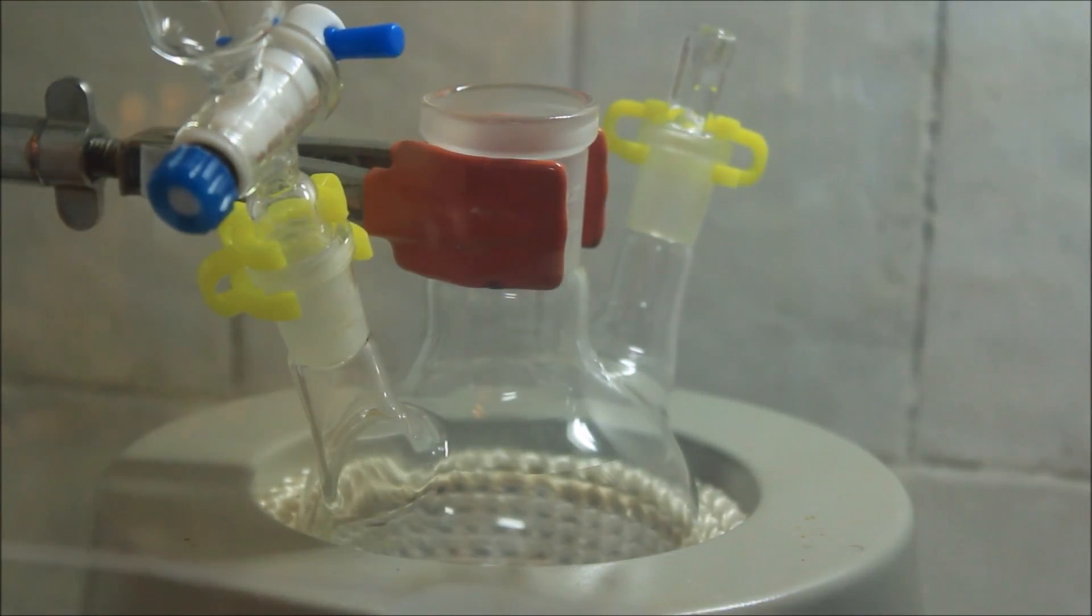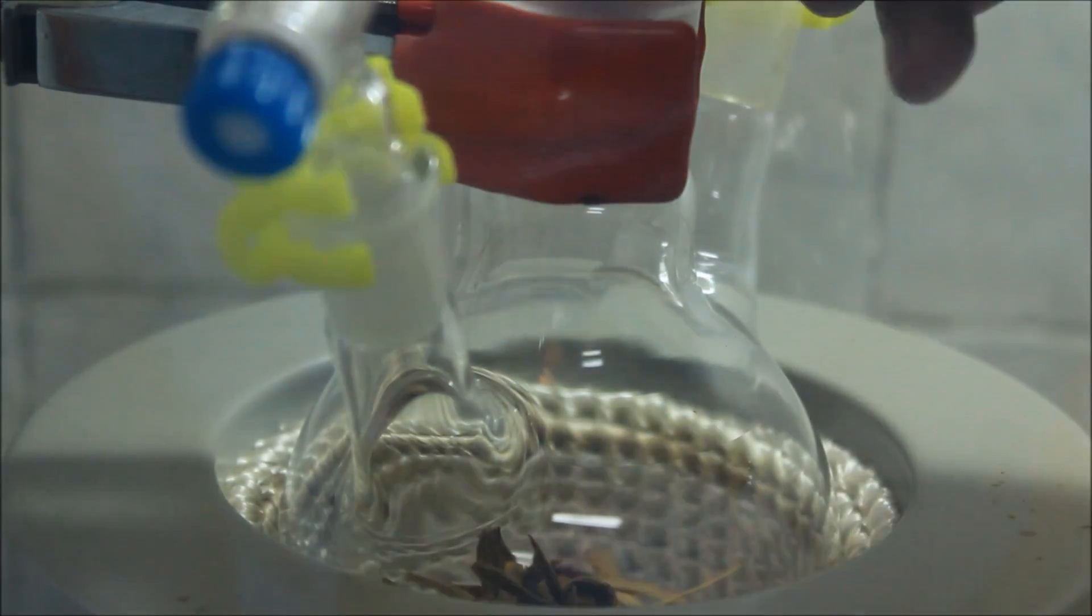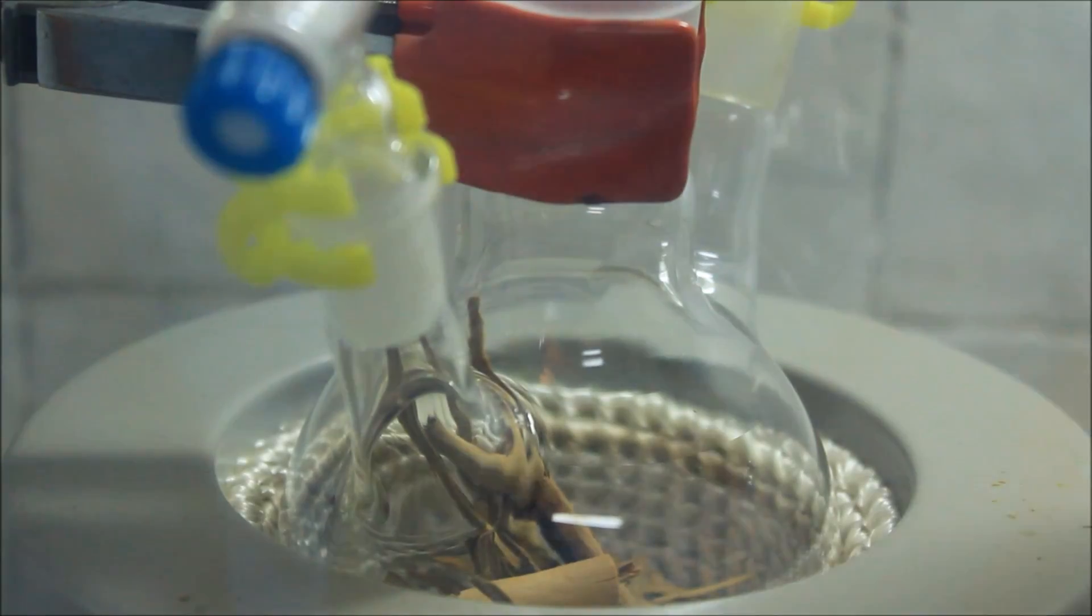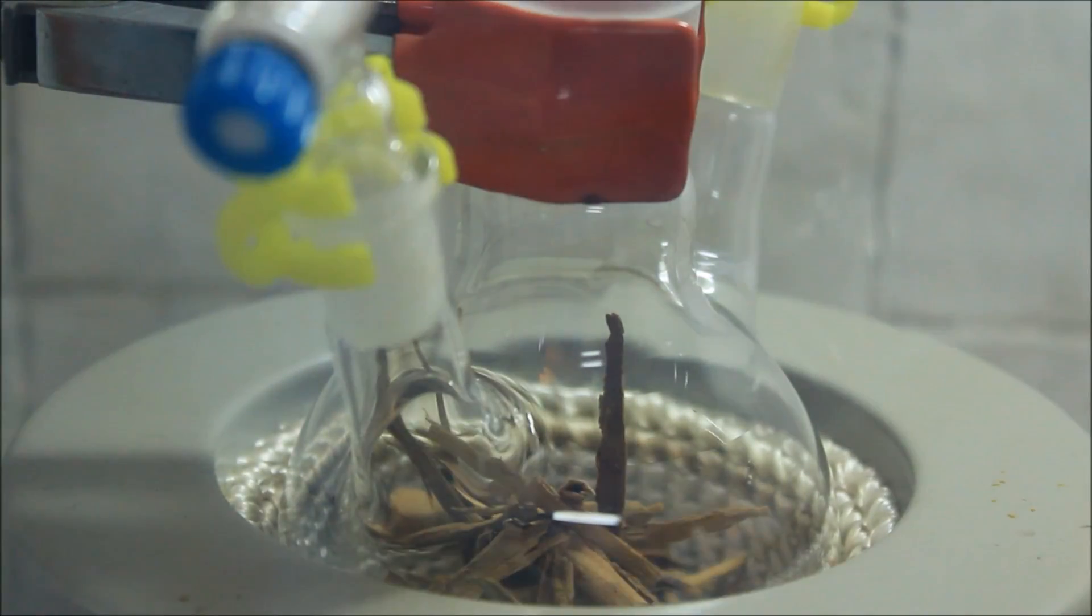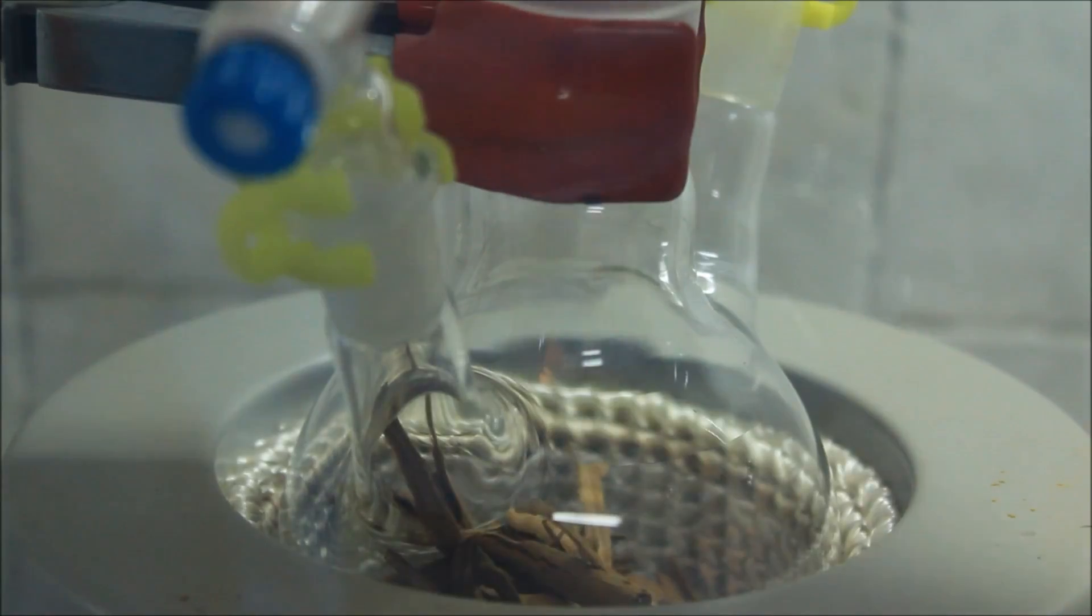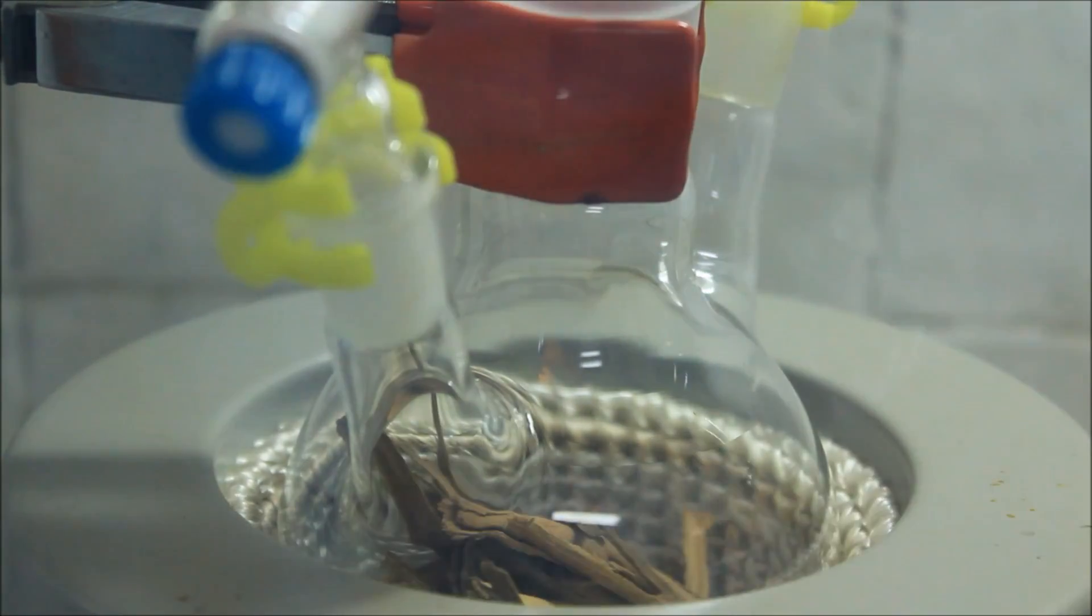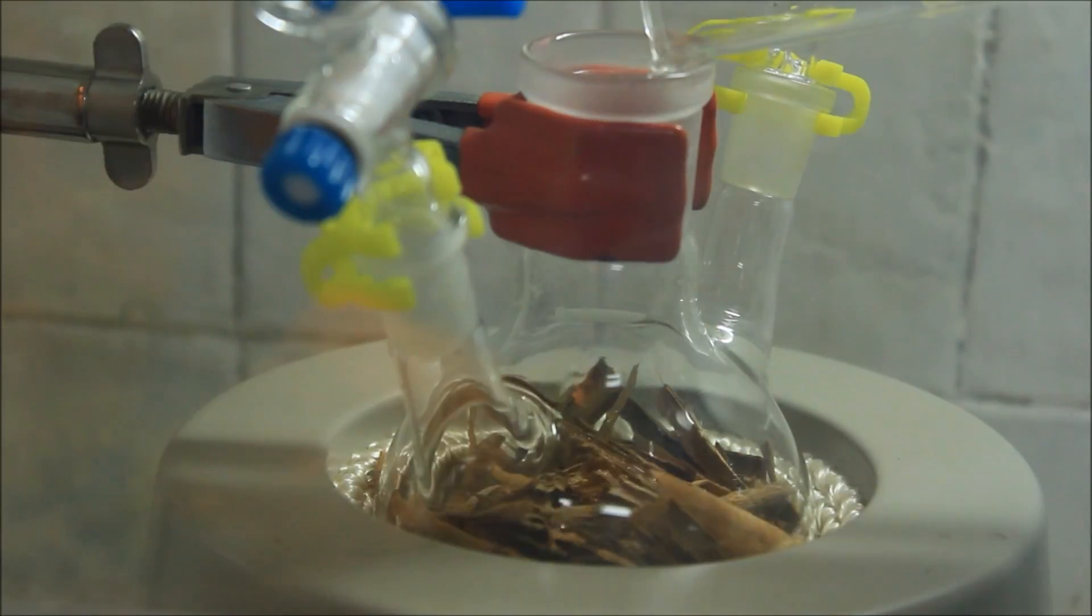Now the cinnamon bark is placed inside a three neck round bottom flask. You could also use a single neck RB flask, but it is better to use a three neck one if you have it, you will see later why. Once all the cinnamon was added, 150 milliliters of distilled water are added to the flask.